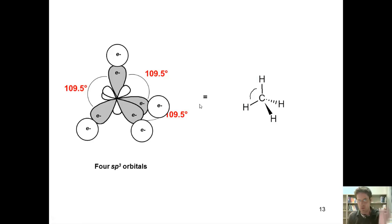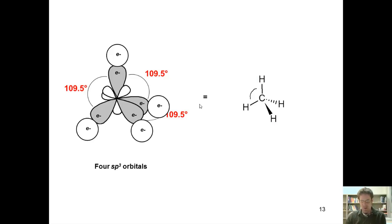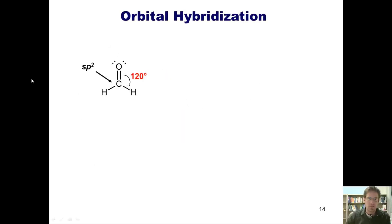That's what orbital hybridization is. The word hybrid comes from a Latin root that essentially means mixing or combining. So what it's doing is taking an s orbital and some number of p orbitals and squishing them together to make new orbitals. Now let's see if we can figure out and apply it to a different kind of hybridization.